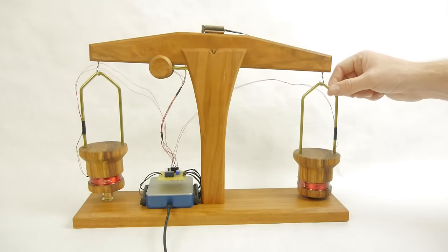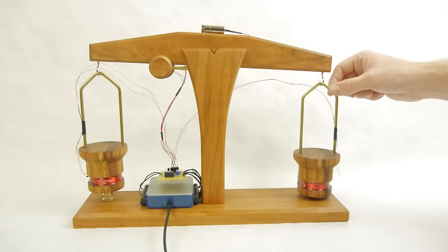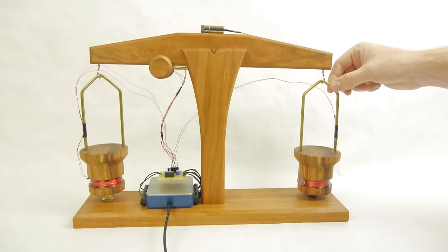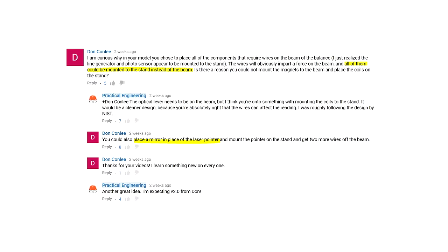I connected everything to the circuit board using 24 gauge magnet wire, not for any other reason other than I thought it would look nice. If I did it over again, I would use a much lighter gauge wire to avoid imposing any extraneous forces on the balance beam from the springiness of the wire.